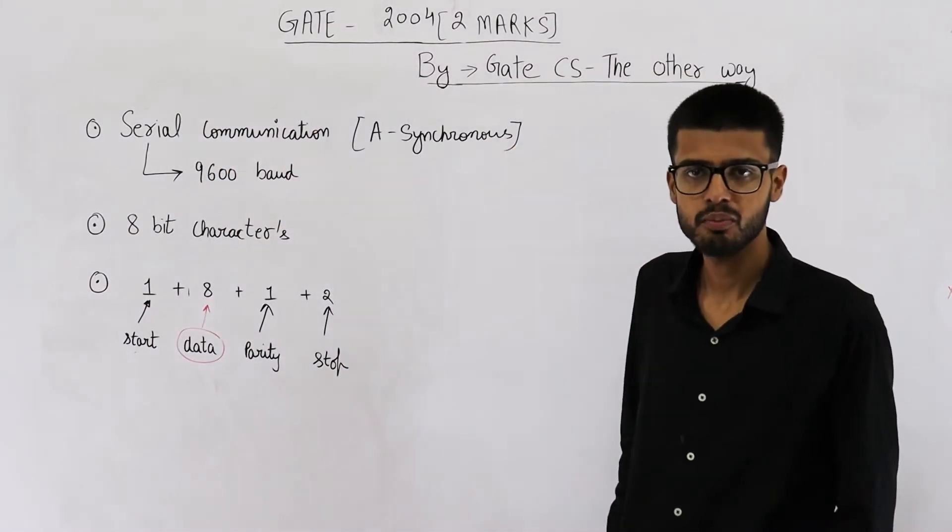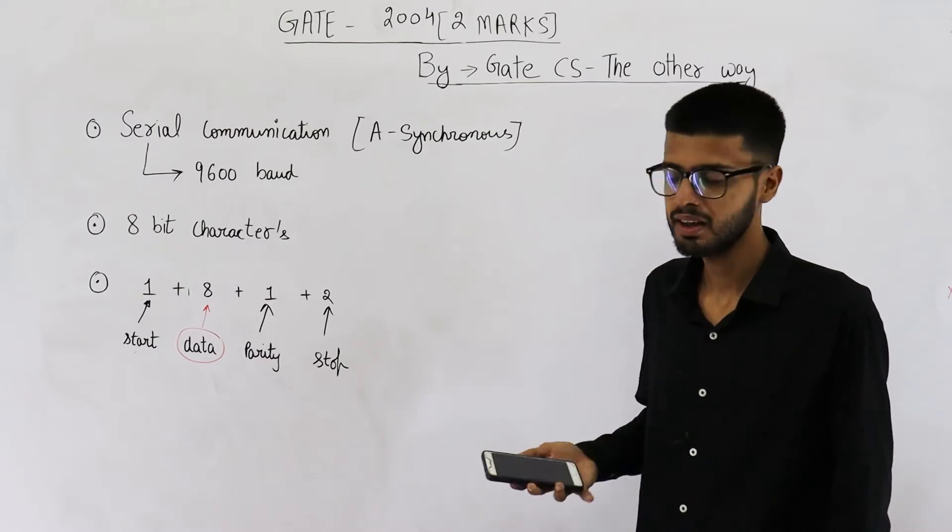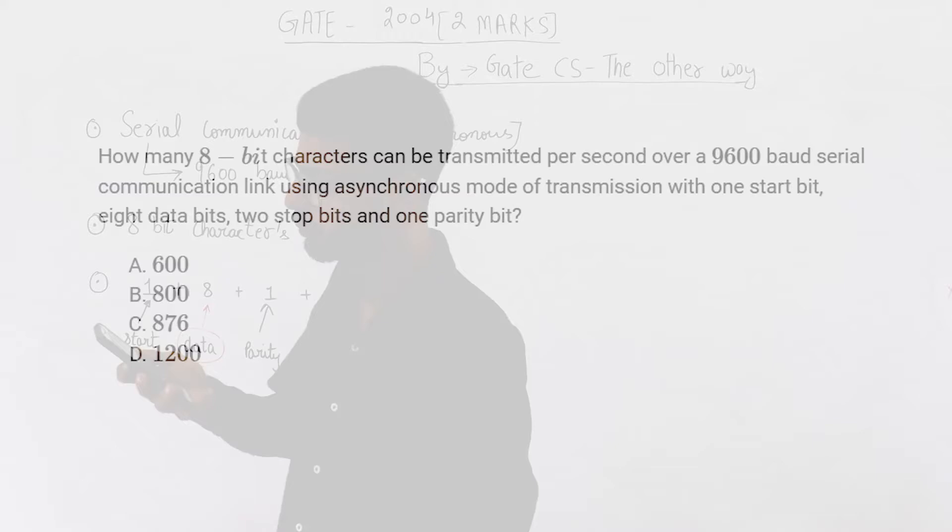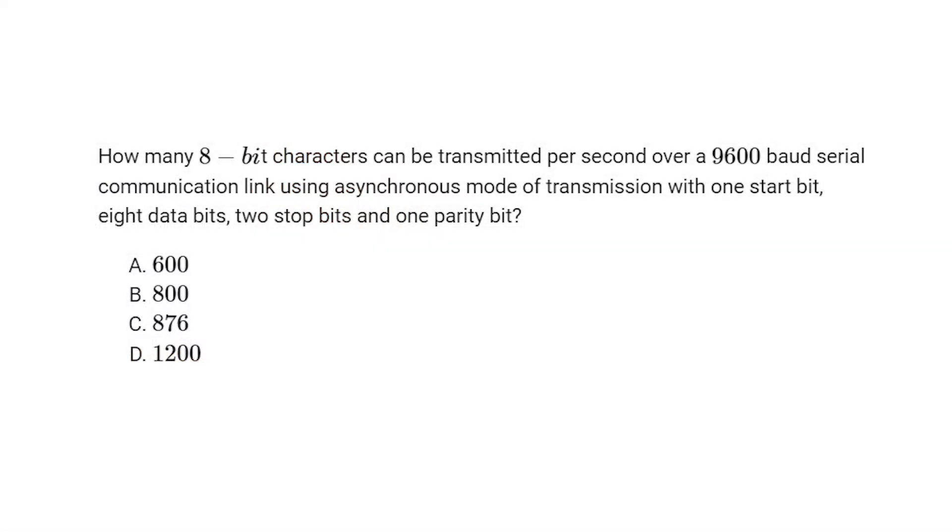This two marks question is from GATE exam of 2004. They are asking how many 8-bit characters can be transmitted per second over a 9600-baud serial communication link using asynchronous mode of transmission with one start bit, eight data bits, two stop bits, and one parity bit.